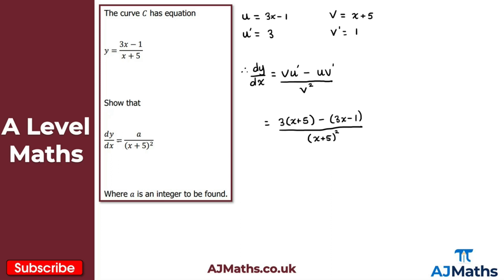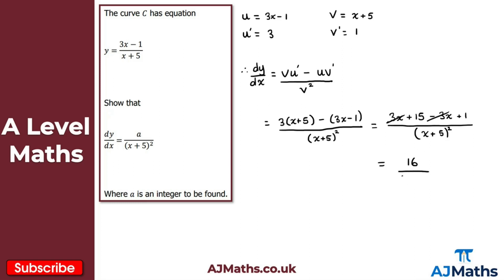Now we simplify the numerator to show it equals a over (x+5) squared. Expanding the bracket: 3 times x is 3x, 3 times 5 is 15. Then minus 3x, and minus minus 1 gives plus 1 — take care of that minus sign, so minus times minus becomes positive. So the numerator is 3x + 15 - 3x + 1. The 3x terms cancel, leaving 15 plus 1 equals 16. Therefore dy by dx equals 16 over (x+5) squared, and so a equals 16.